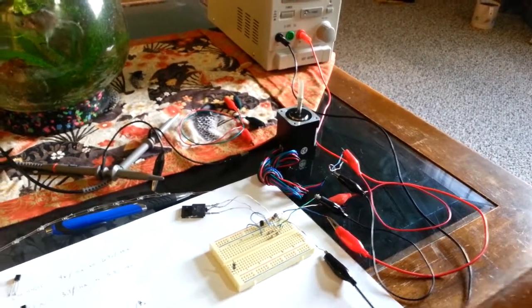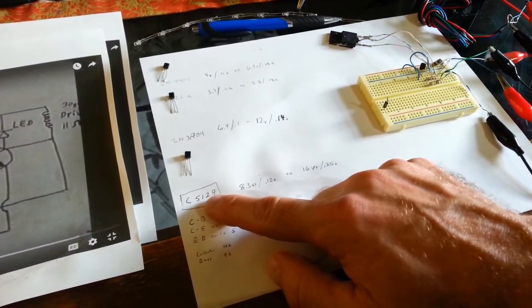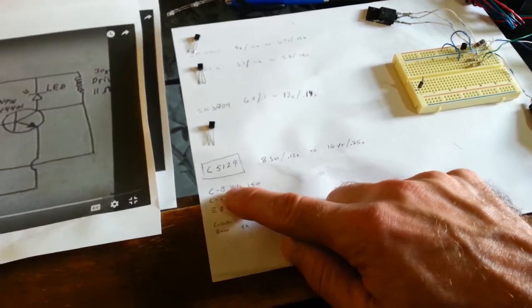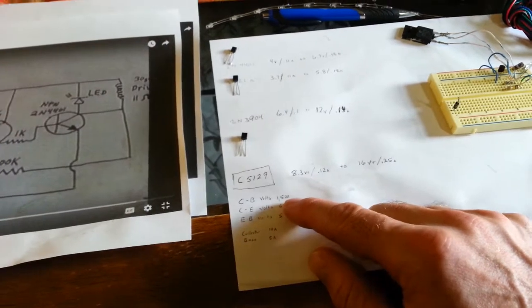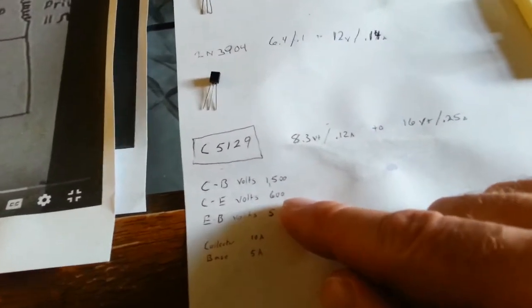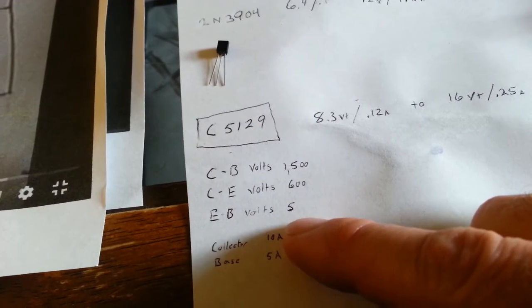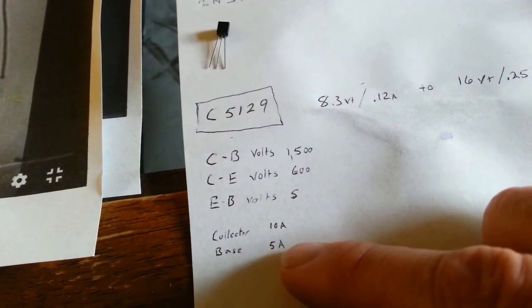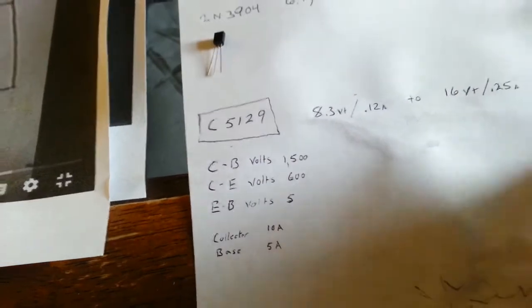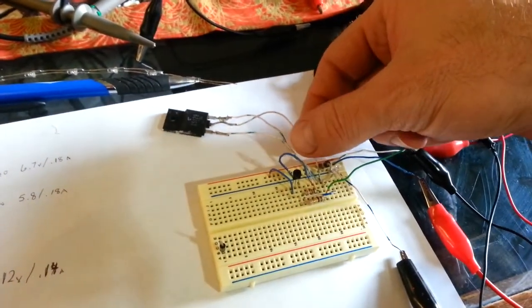This transistor I actually pulled out of a television. The number on it is a C5129. Looking it up, I can see that from the center to the base is 1500 volts, and from the center to the emitter it's about 600 volts. So this is a really high voltage transistor. The base only needs about 5 volts to trigger, and it also has really good amperage too. In theory, you can run a pretty good sized motor with this. I had to add some leads to it to fit in my breadboard, but other than that, everything's the same.